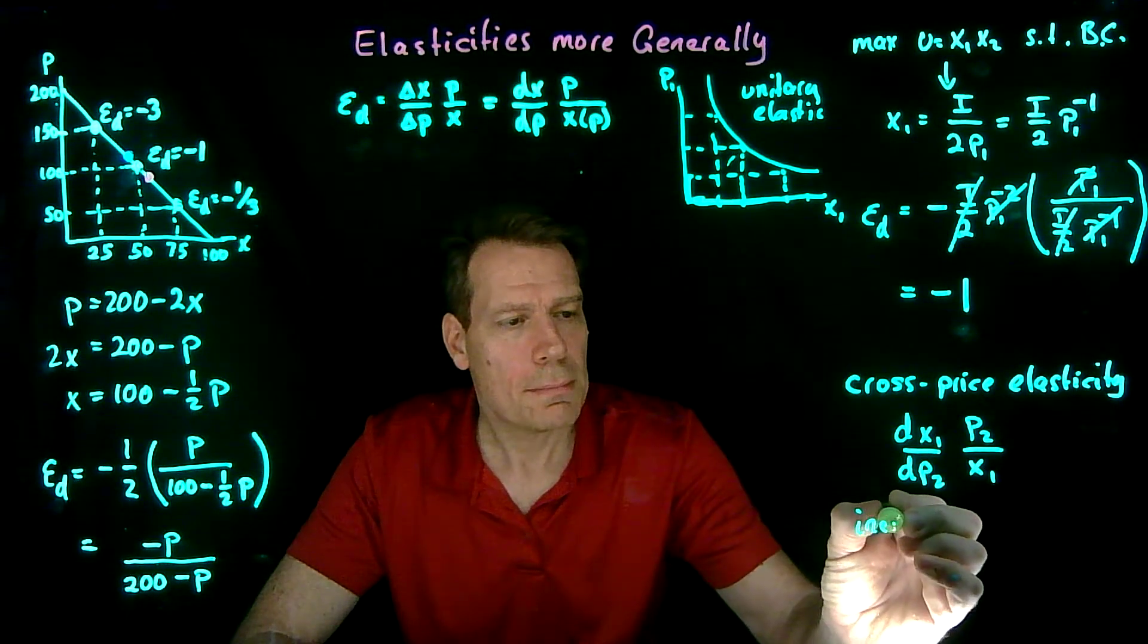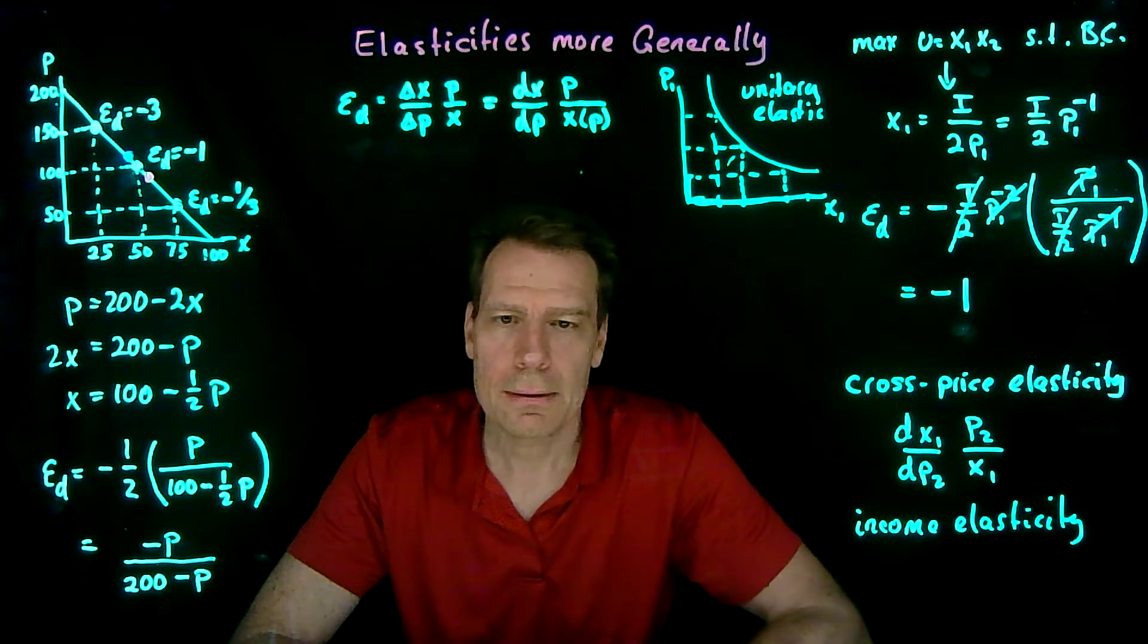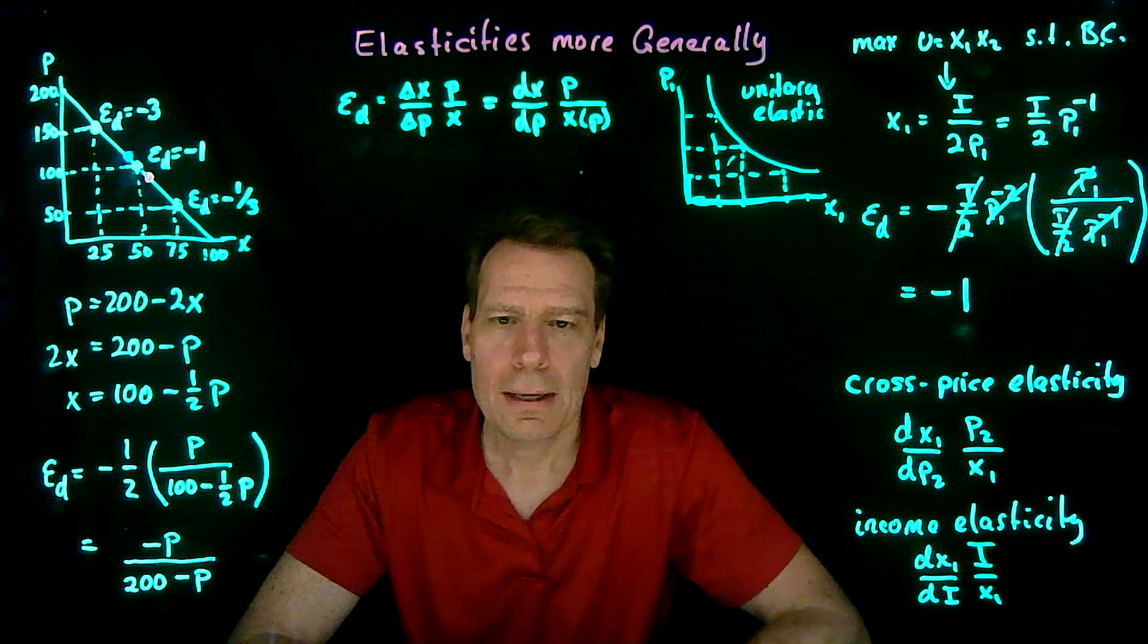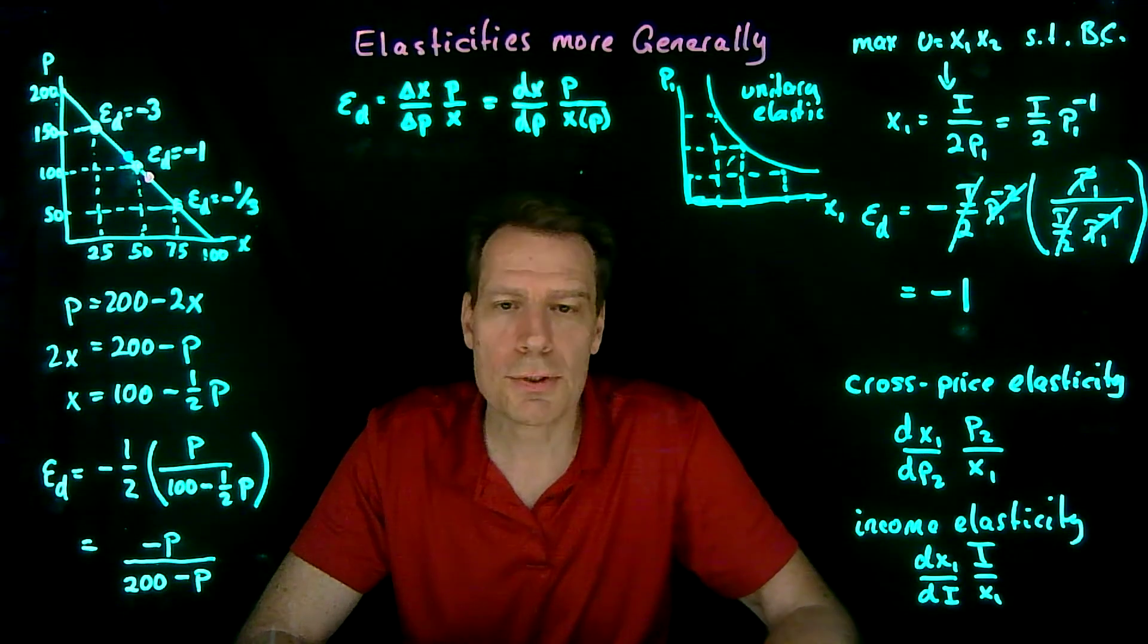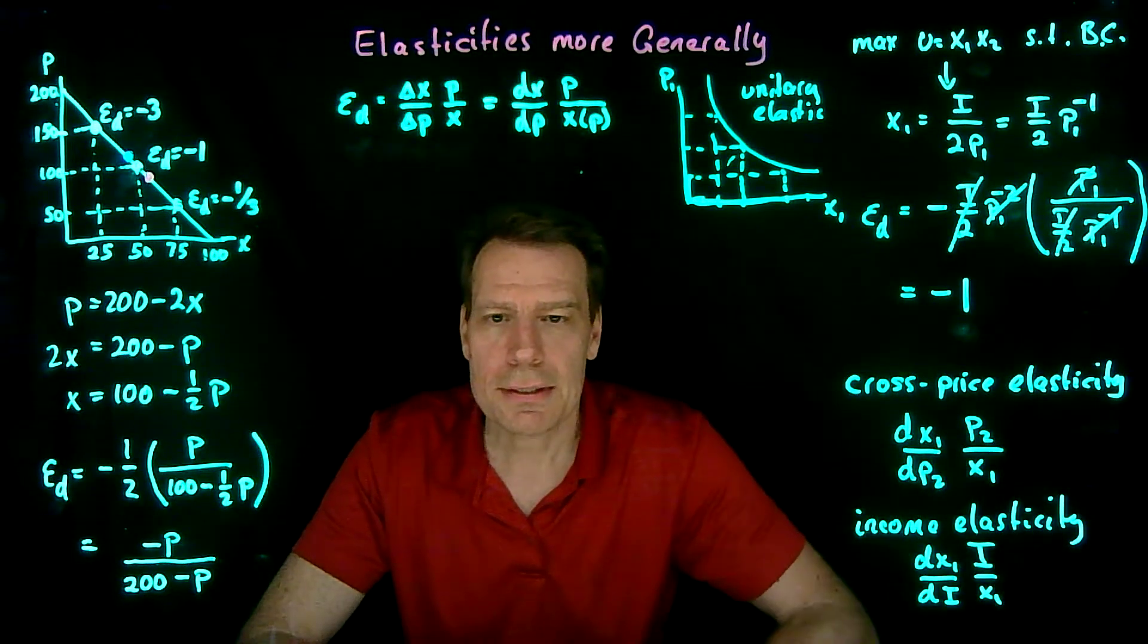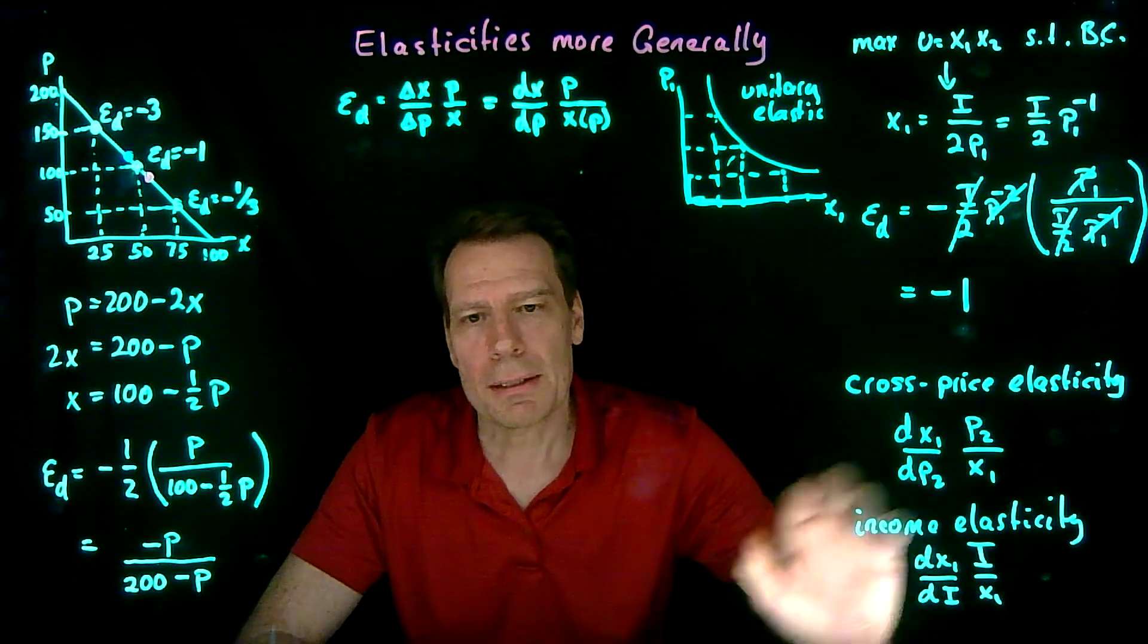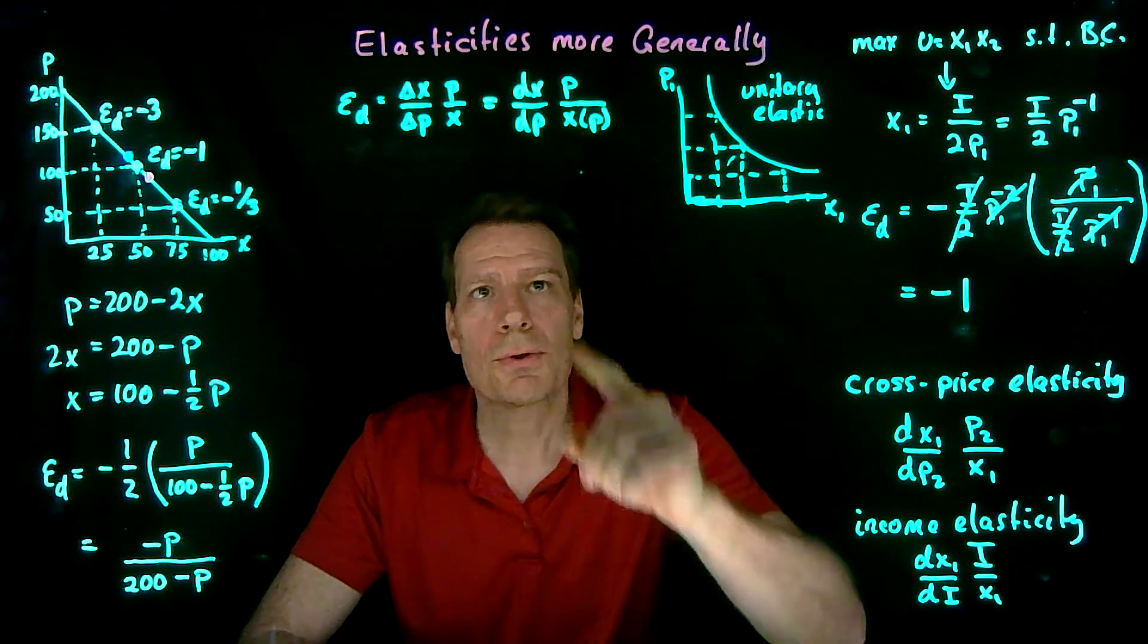Or we could come up with the income elasticity of demand. That's just the change in X1 with respect to income times income divided by X1. As income increases by a certain percentage, what's the percentage change in my consumption for the good X1? How responsive is my consumption to changes in income? So you can think of these other kinds of elasticity that relate not to the own price demand curve, but to the cross-price demand curve or the income demand curve. But we're typically not going to be concerned about these. What we will be concerned about is the own price elasticity of the demand curve, which you now know how to calculate.